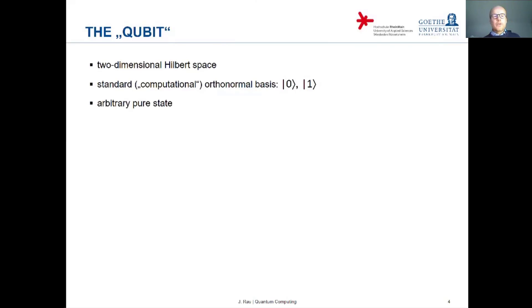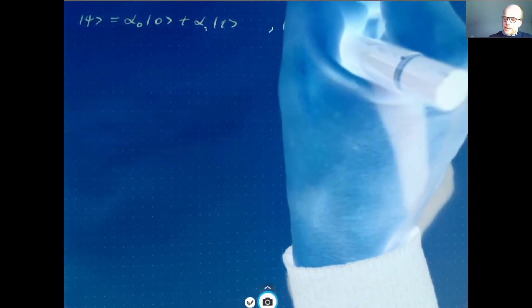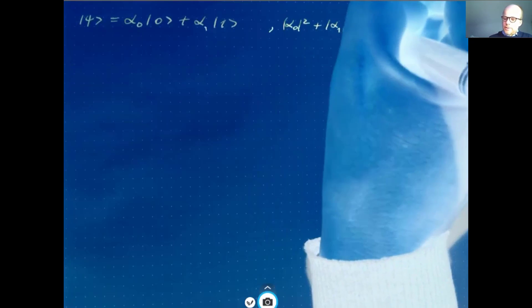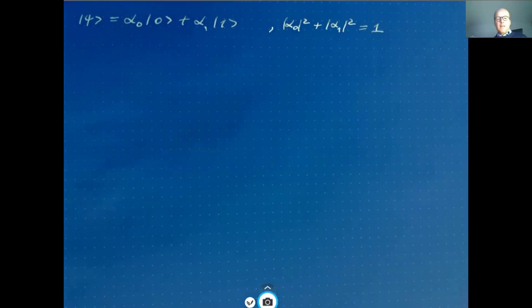An arbitrary pure state in this two-dimensional Hilbert space can be written as a superposition of these two basis states. Of course, the coefficients — the amplitudes — have to satisfy the normalization condition. So we have the sum of the absolute values squared must be equal to 1.